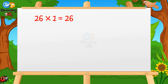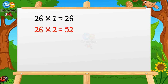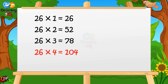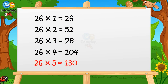26 ones are 26. 26 twos are 52. 26 threes are 78. 26 fours are 104. 26 fives are 130.